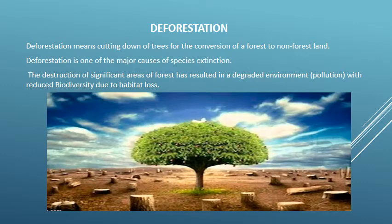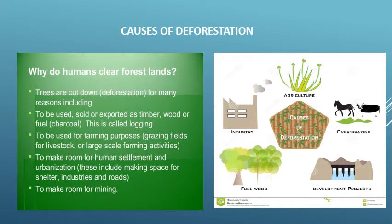Deforestation means cutting down of trees for the conversion of a forest to non-forest land, and it is one of the major causes of species extinction. The destruction of significant areas of forest has resulted in a degraded environment with reduced biodiversity due to habitat loss. Trees are cut down for many reasons: to be used, sold, or exported as timber, wood, fuel, or charcoal — this is called logging. Trees are also cleared for farming, grazing fields for livestock, human settlements and urbanization, making space for shelter, industries, roads, and mining.